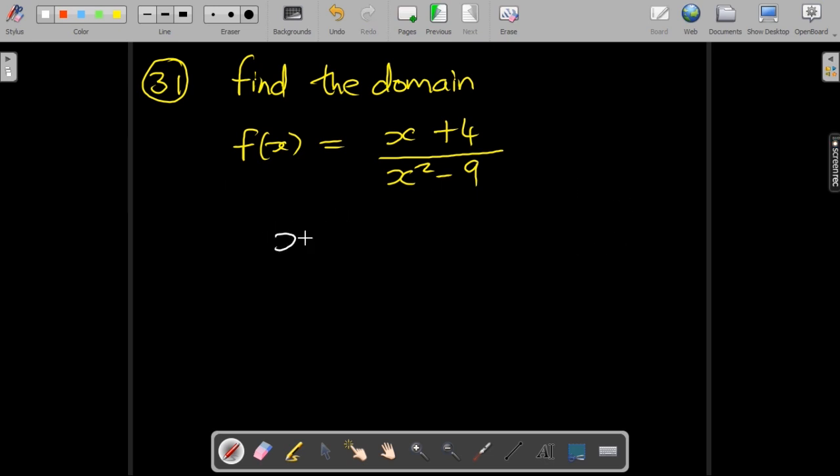We don't want this to be zero, and this is the difference of squares, so this is (x - 3)(x + 3). The solutions to this would be 3 and -3.